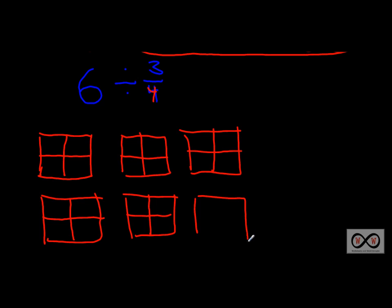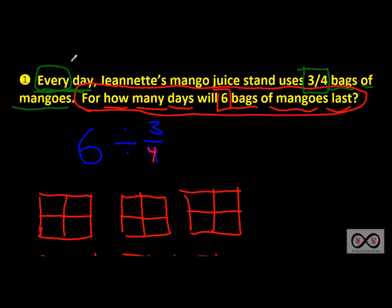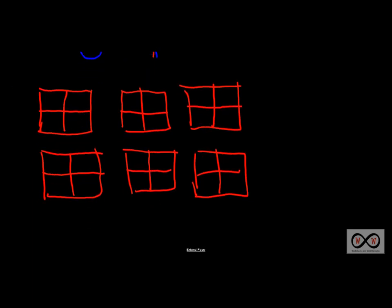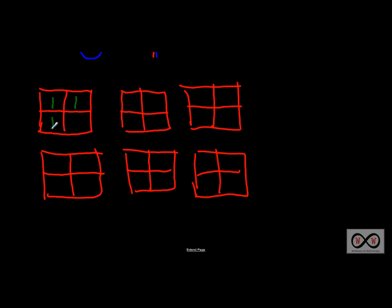Go ahead and draw your bags of mangoes as rectangles — you could use circles, but we chose rectangles to match our theme. Now you have six bags of mangoes. According to the problem, every day Jeanette uses three-fourths of a bag, meaning three out of four equal parts that make up one whole bag. On day one she uses three out of four: one-fourth, two-fourths, three-fourths. On day two she again uses three-fourths of a bag.